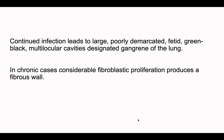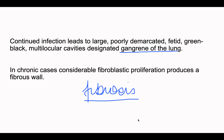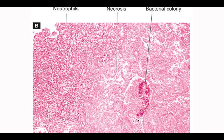There can also be gangrene of the lung. In very chronic lung abscess, fibrosis takes place and a fibrous wall can be present. In this histological image, the lung parenchyma is totally destroyed — you cannot identify where the alveoli are. Neutrophils are visible, there is necrosis, eosinophilic acellular material is present, and a few bacterial colonies are also seen.